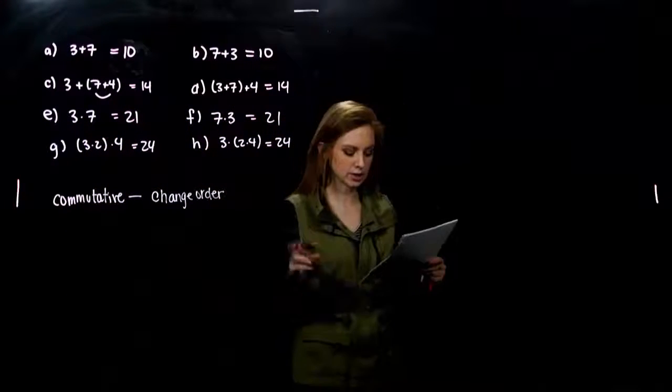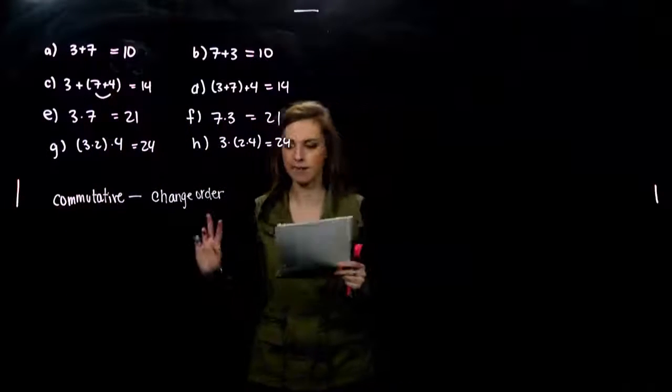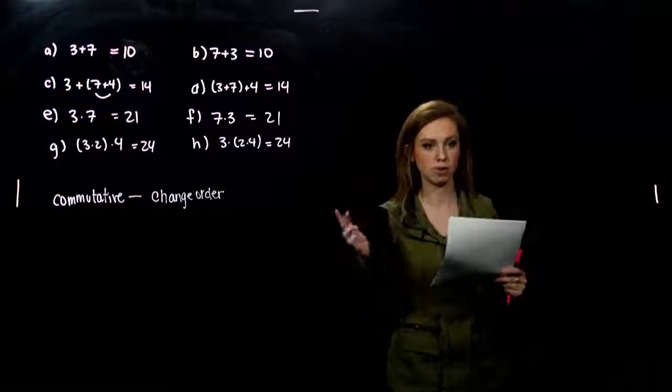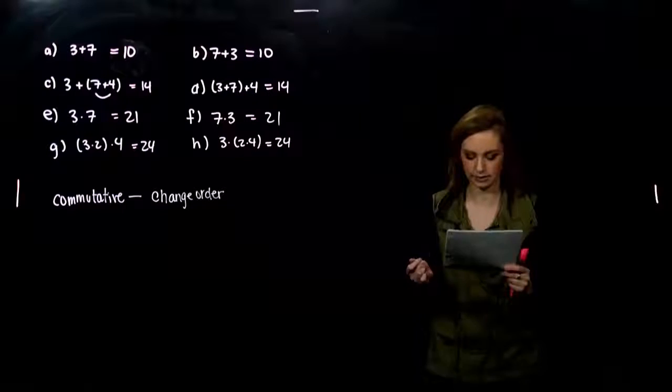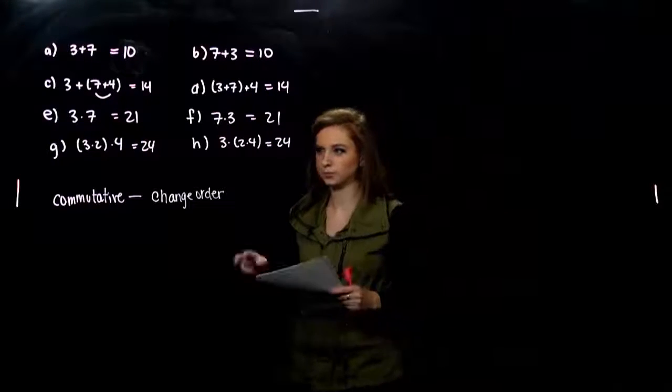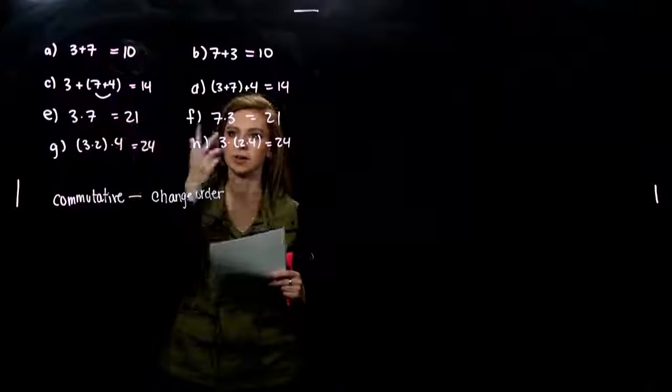I can commute two numbers. If I have A plus B, I can add B plus A. I can commute those two, change the order around. Same thing for multiplication. We can also, so we add a commutative here, commutative laws.